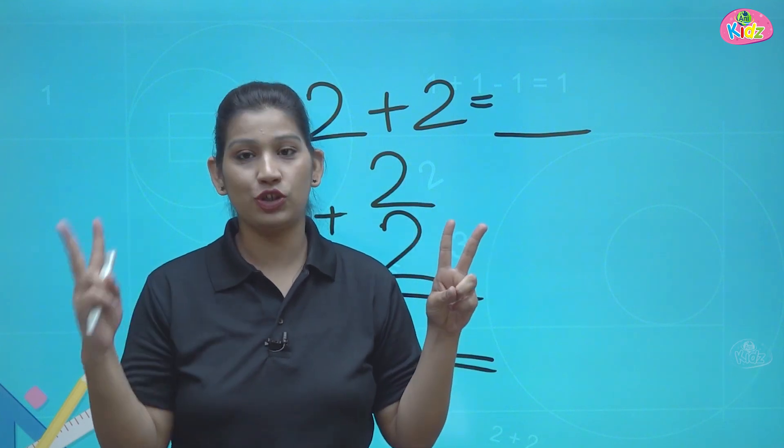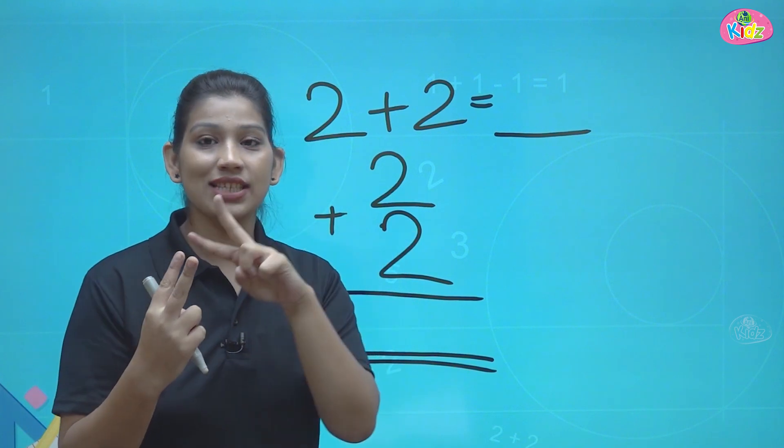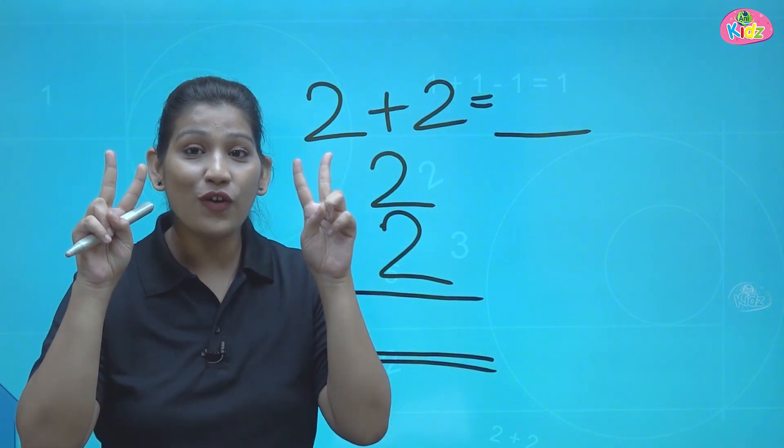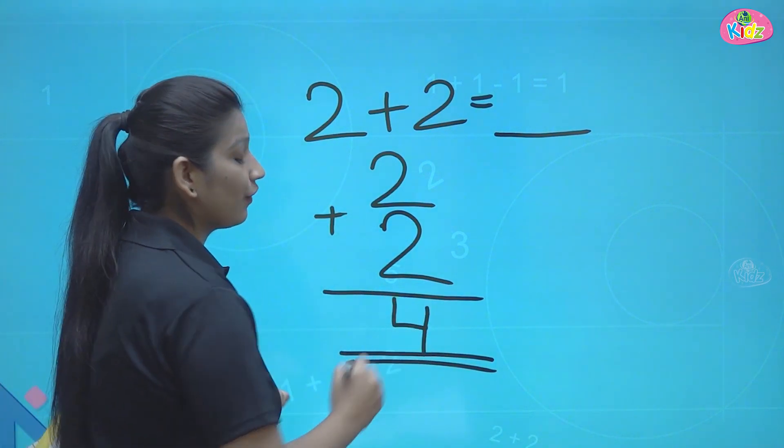Let's open it. 1, 2, 1, 2. Now let's count the total number of fingers. 1, 2, 3, 4. We have total 4 fingers open. So we can also write as 4.